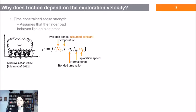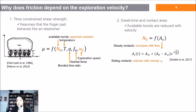We believe this has two explanations. The first one is that assuming the finger behaves like an elastomer, the adhesive molecular bonds between the finger and the optically smooth surface are decreased with velocity. The second one assumes that the shear strength of these bonds is increased with contact time.